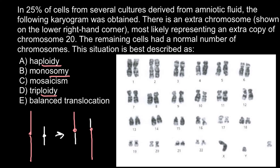In 50% of cases, such a person would give one normal chromosome and one normal chromosome from each set. Such a person can also give two abnormal chromosomes, which wouldn't lead to visible problems. But if a person gives one normal from one set and one abnormal from another set, we would see phenotypic and health problems. This is what balanced translocation is.